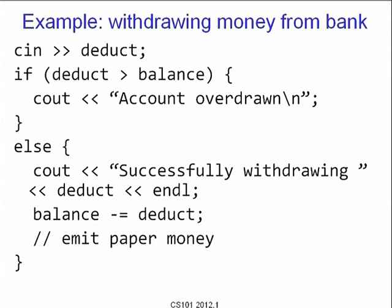For example, suppose you are writing code for an ATM machine. You read from the keypad the amount to be deducted. If the amount to be deducted is more than the balance, the bank prevents withdrawal — it says 'account overdrawn' and finishes the transaction. Otherwise it says 'successfully withdrawing, deducting amount of rupees' and reduces the balance. You also have to ensure that paper money is ejected — otherwise customers will be very unhappy.